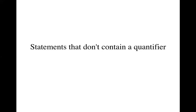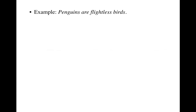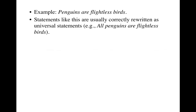This video will explain how to deal with categorical statements that don't contain an explicit quantifier. Here's an example: 'Penguins are flightless birds.' Statements like this are usually correctly rewritten as universal statements — for example, 'All penguins are flightless birds.'